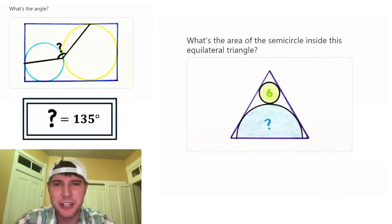This is the puzzle for day 12. It says, what's the area of the semicircle inside this equilateral triangle? So we're given that this circle is 6. We're given that it's an equilateral triangle. That's super helpful. And then we're given this semicircle. This will be a fun one. How exciting.